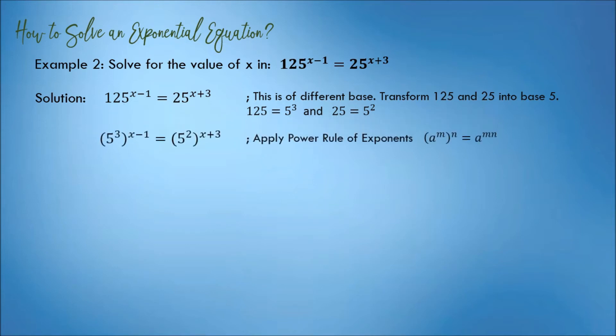The equation becomes 5 cubed raised to x minus 1 is equal to 5 squared raised to x plus 3.